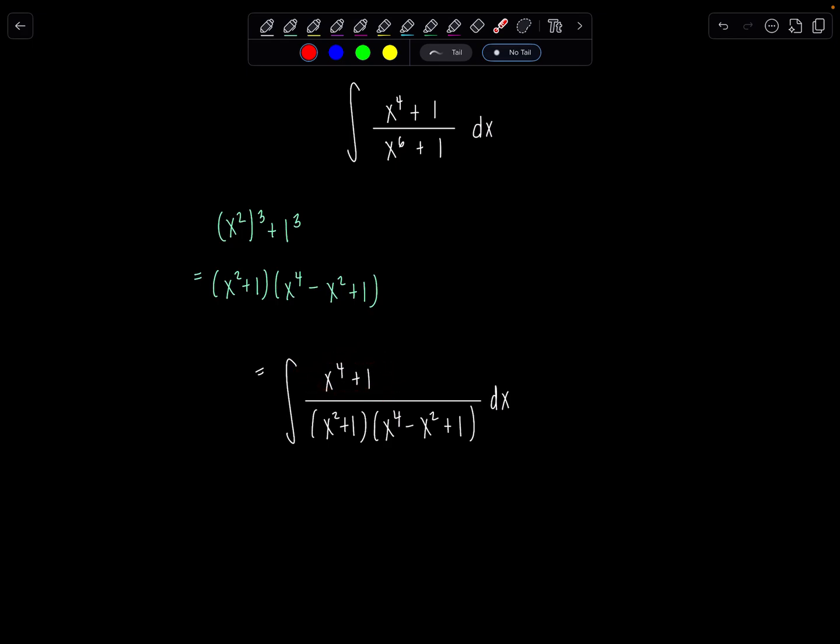So that's not the way to go. But the next thing that stood out to me was x to the fourth plus one looks so similar to this factor here in the denominator. Let me see if I can manipulate it and cancel things out. So the next move I made was I subtracted x squared and added x squared.